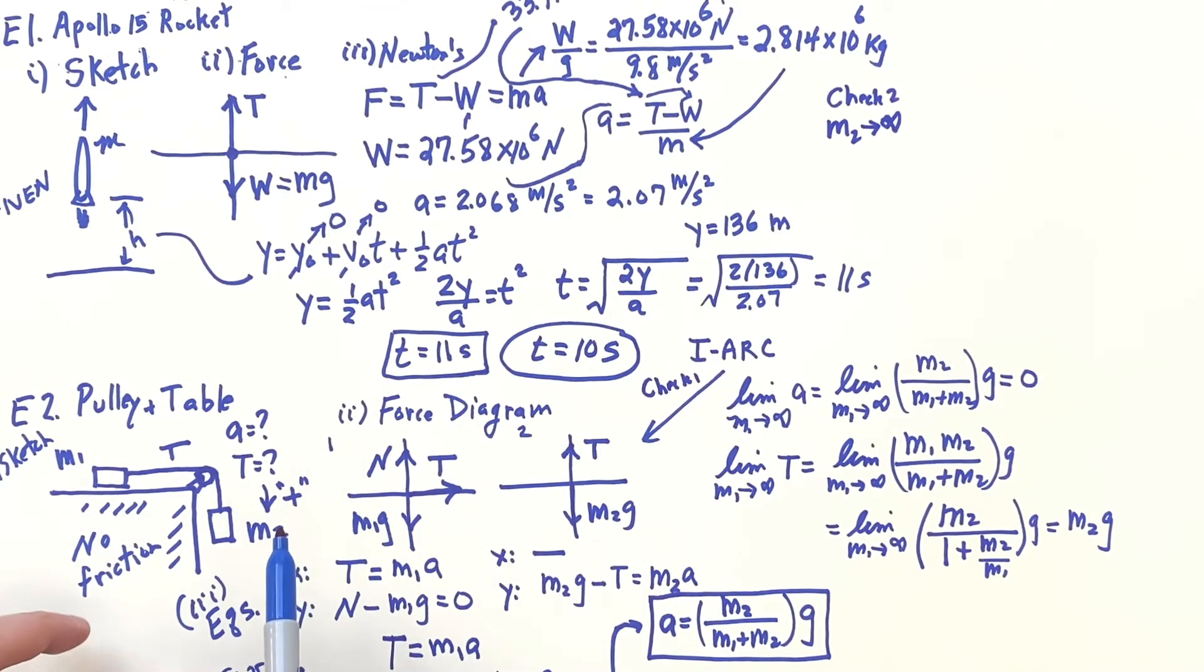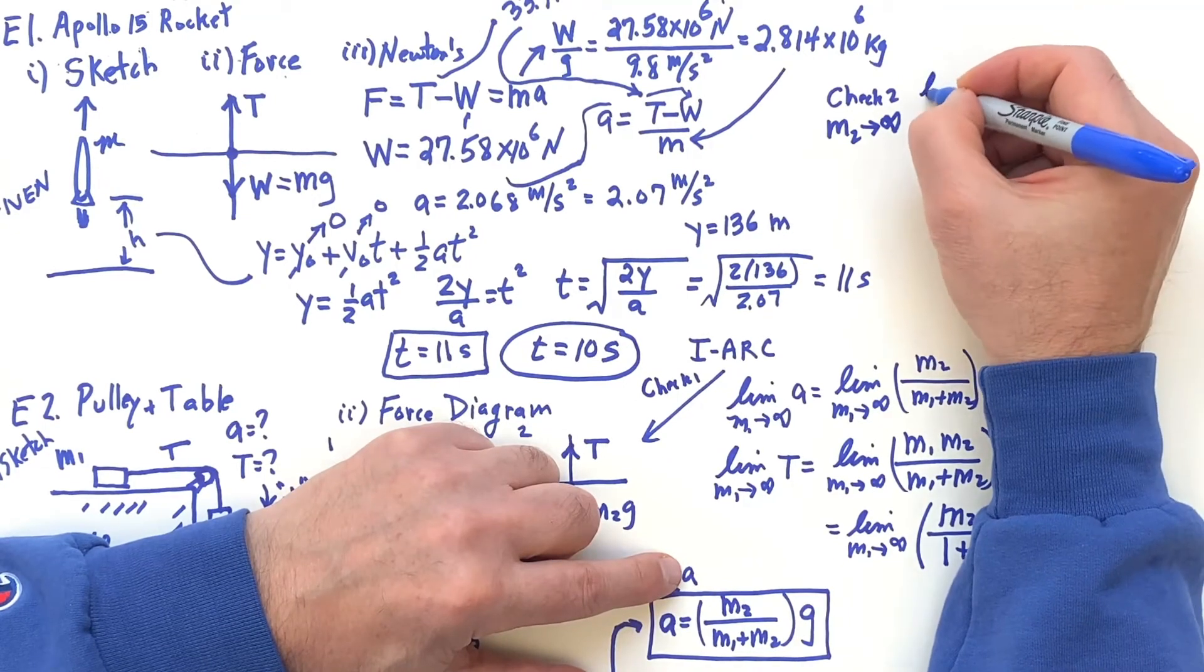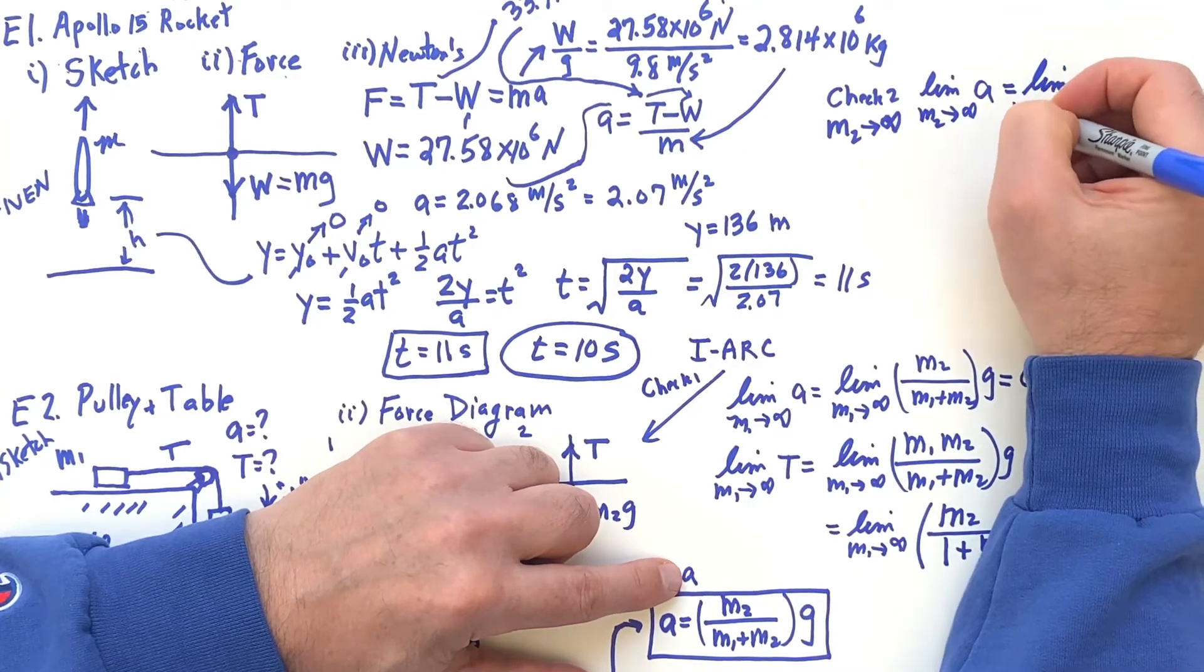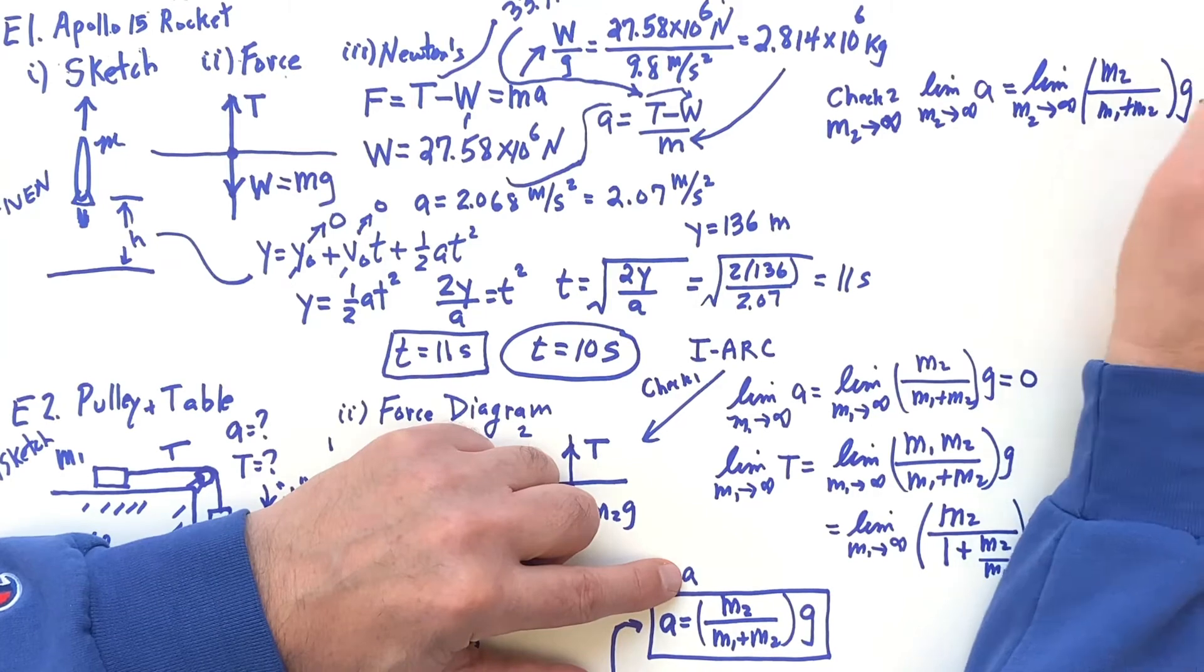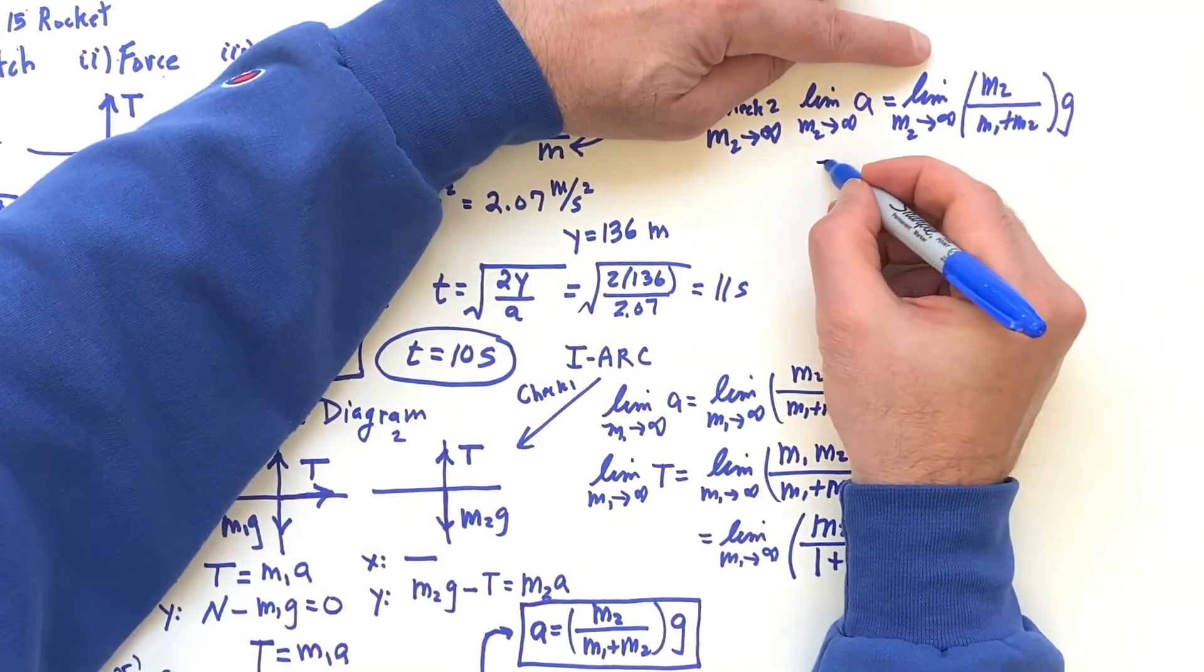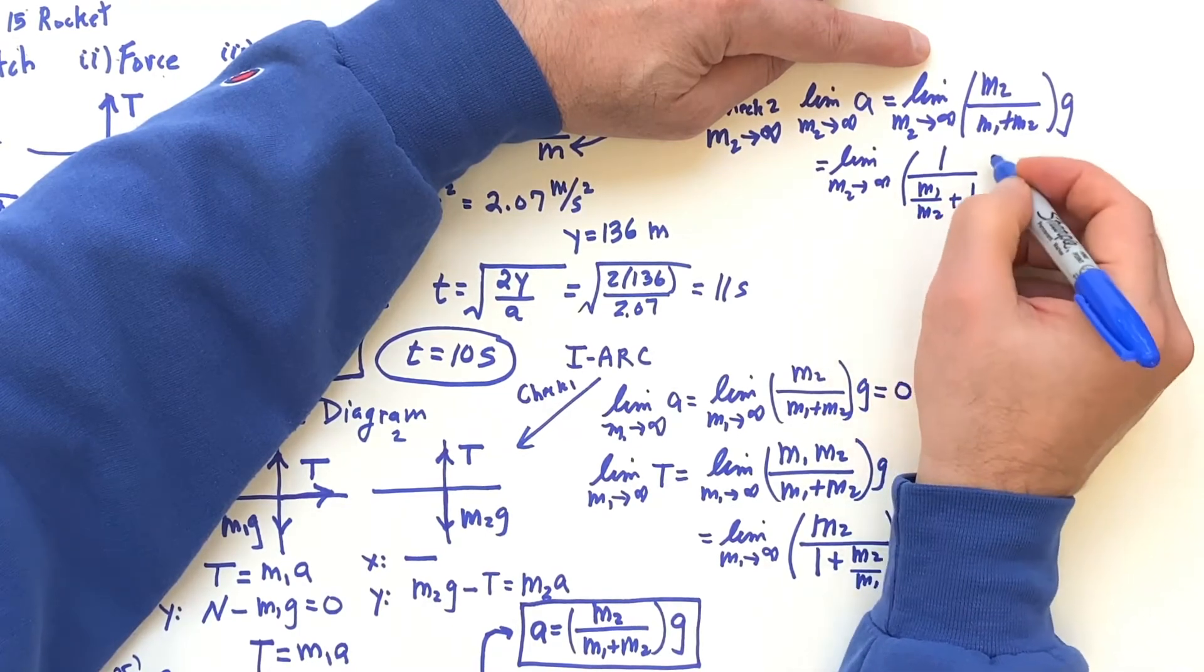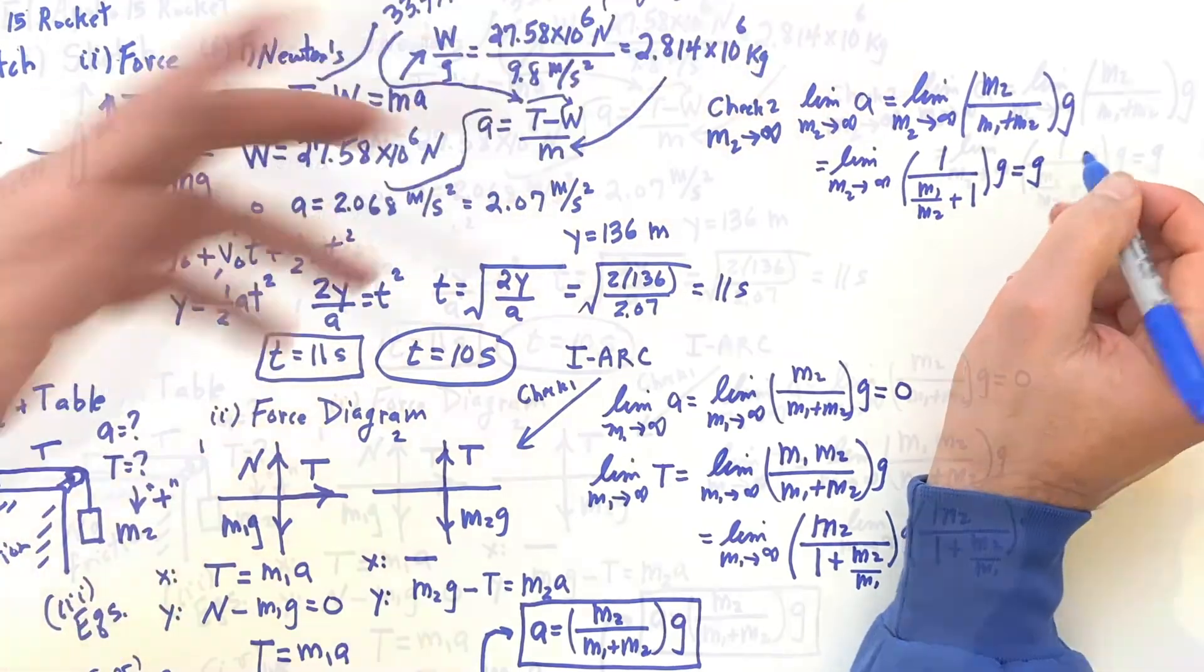So, let's go ahead and see if we get that. So, for the acceleration, M2 goes to infinity, and the acceleration is going to be the limit, M2 go to infinity, M2 over M1 plus M2 times G. So, now we'll do the same thing with the M2, divide top and bottom. So, M2 goes to infinity. We'll have here 1 over M1 over M2 plus M2 over M2 is 1. And as M2 goes to infinity, this will go to 0. You'll have G, which is what we said would happen.